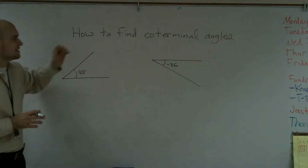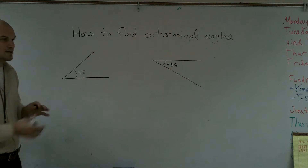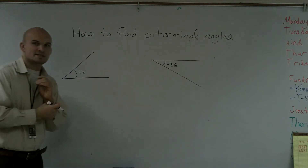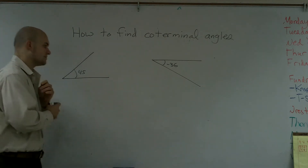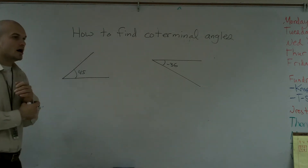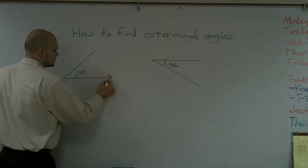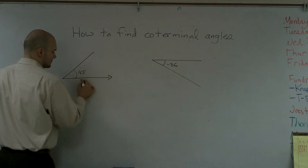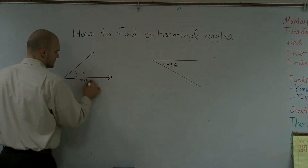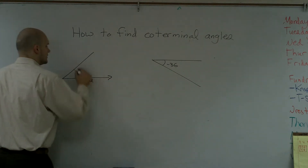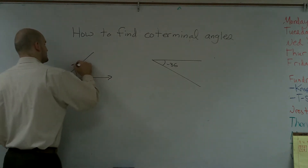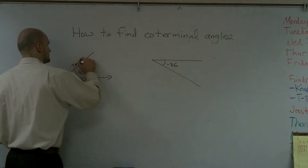What I'd like to do is show you how to find co-terminal angles. If you can remember, the definition of co-terminal angles are two angles that share the same initial and terminal side.